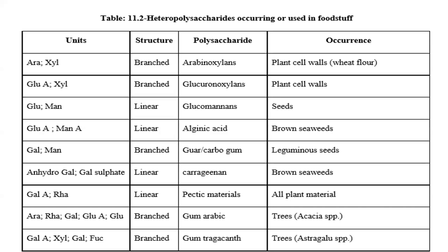Carrageenan has a linear structure and is available in red seaweeds. Pectic materials have a linear structure of galactose and rhamnose and are present in all plant materials. Gum arabic has a branched structure and is present in trees, especially acacia species. Gum tragacanth also has a branched structure with galactose, xylose and fucose and is present in trees, especially astragalus species. That concludes the basic information about carbohydrates.